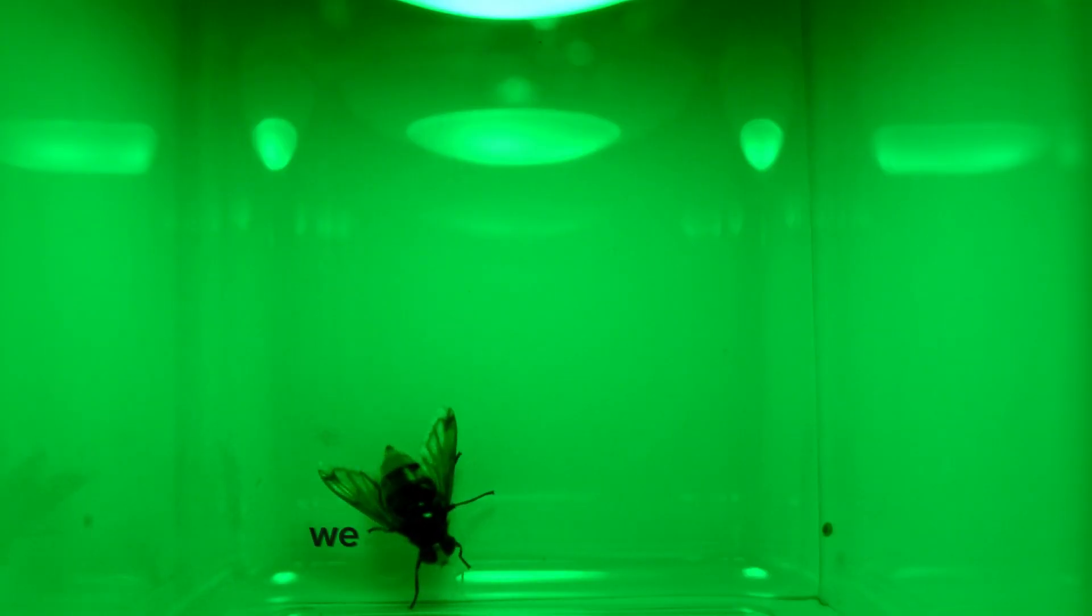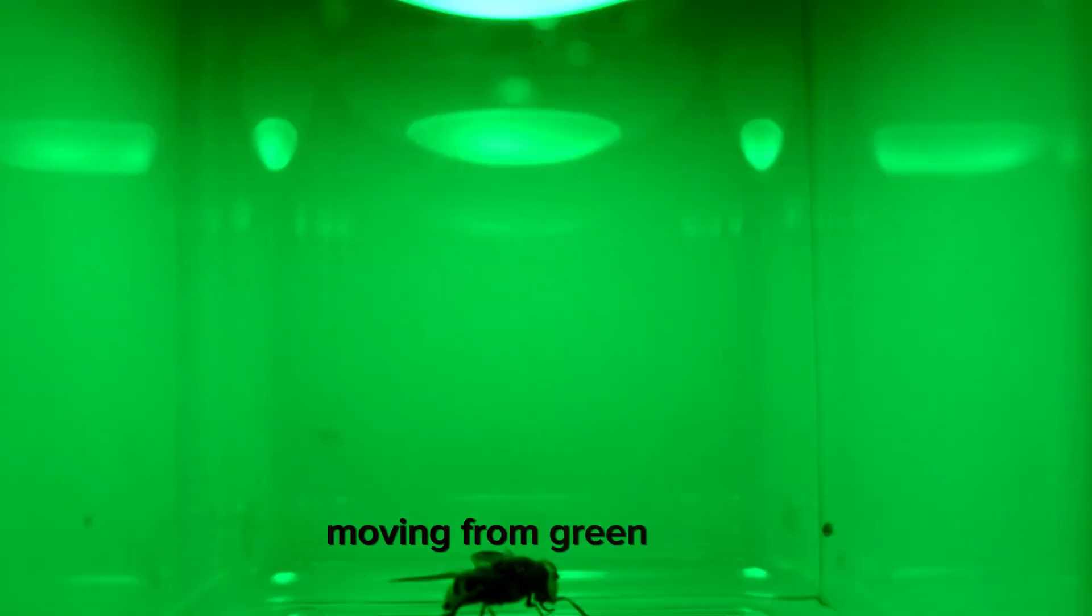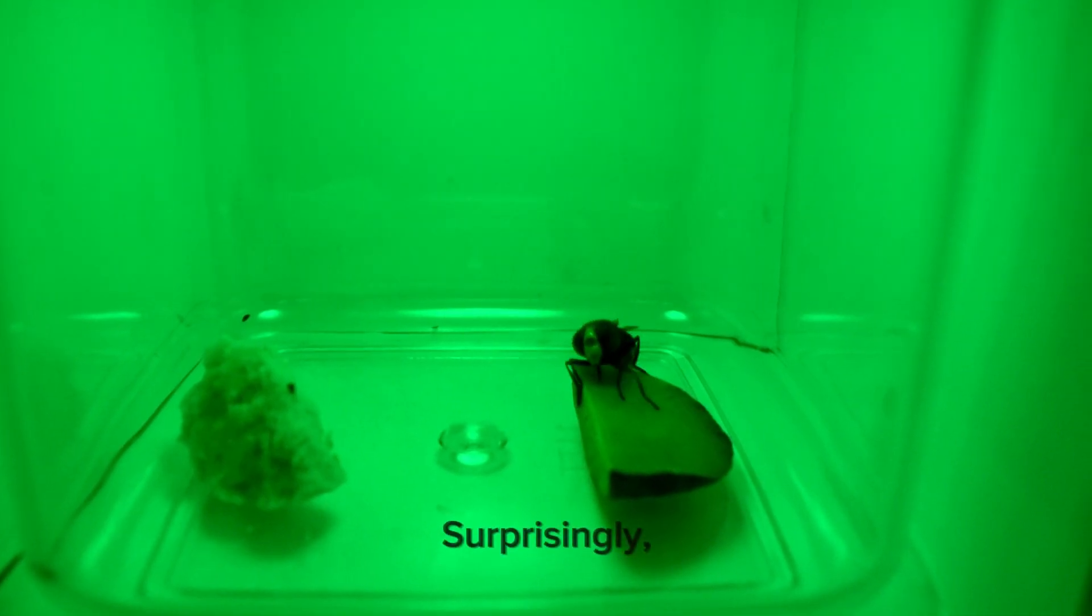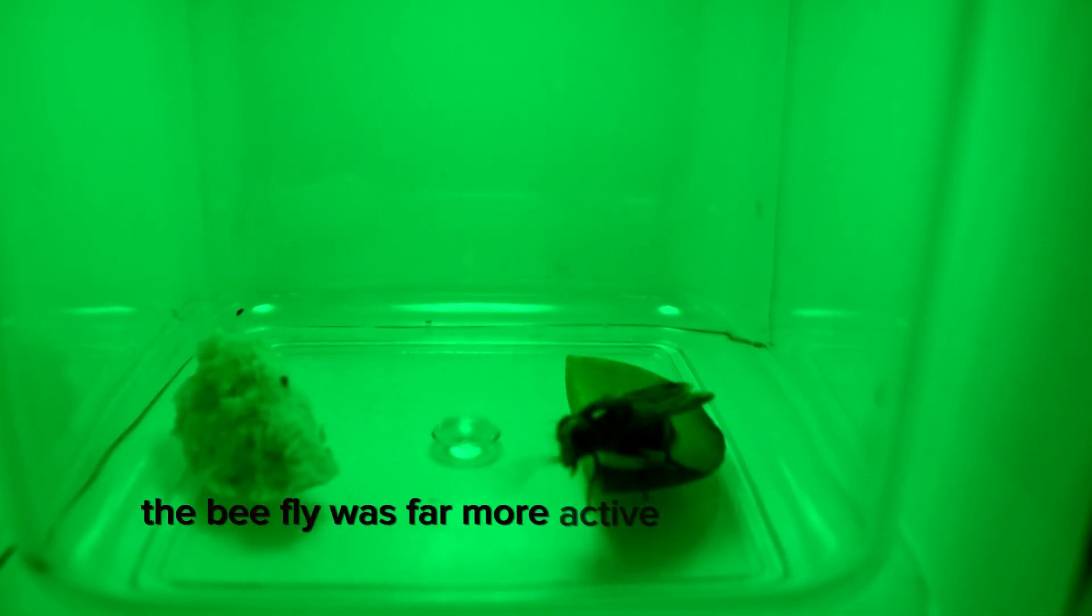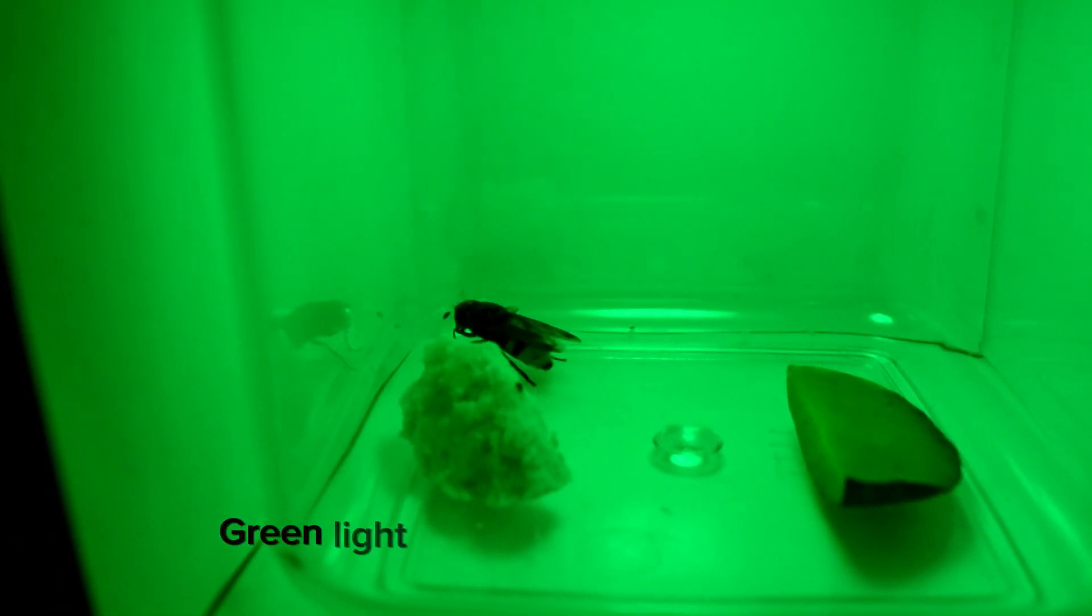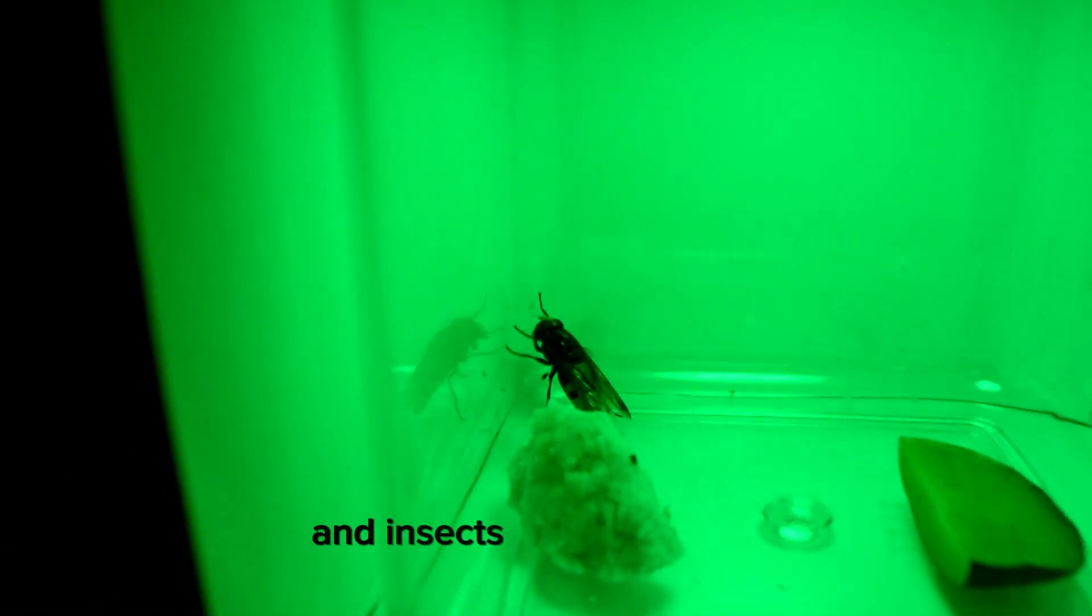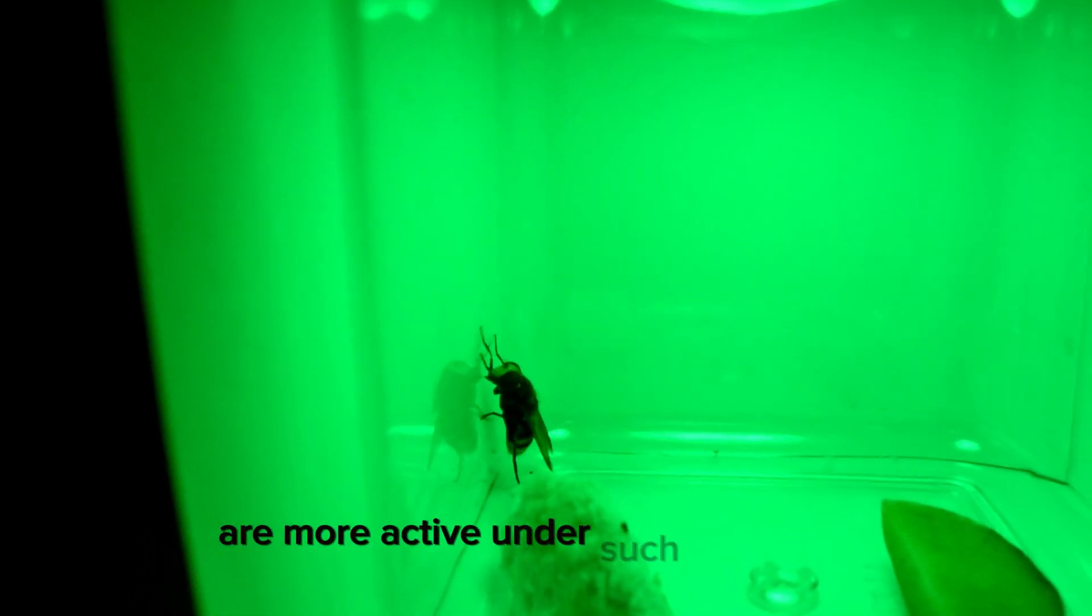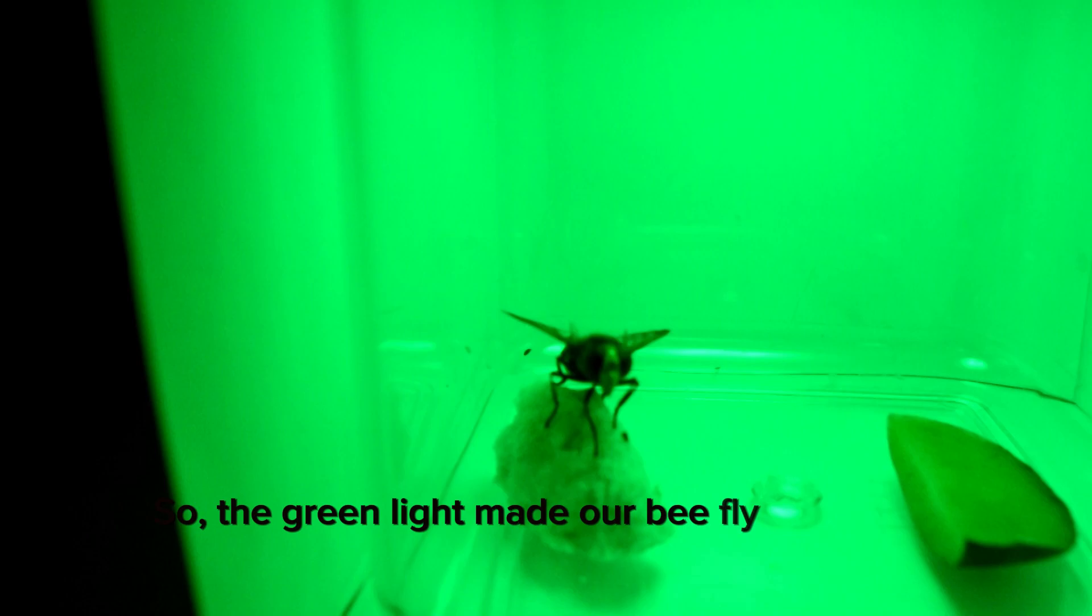In our experiment, we switched up the lighting, moving from green to red. Surprisingly, the bee fly was far more active under the green light. Why, you ask? Green light resembles natural daylight, and insects like our bee fly are more active under such conditions. So, the green light made our bee fly buzz with energy.